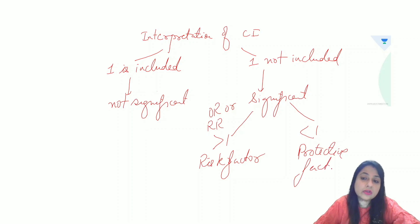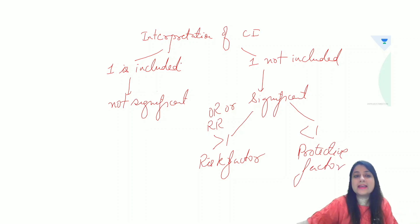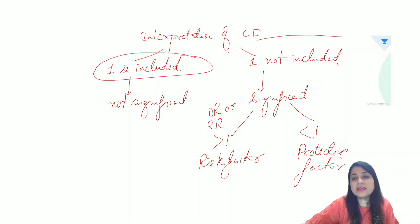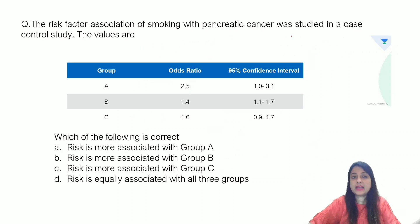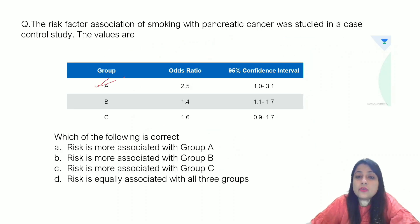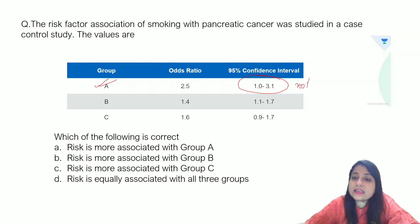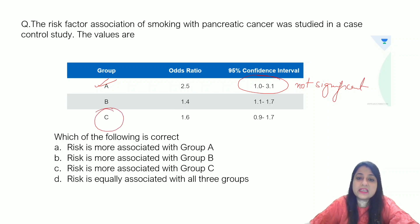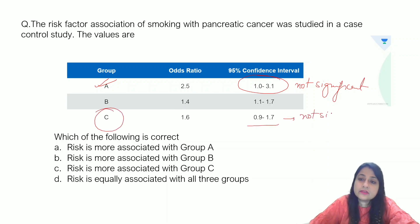So come back to this question. Look at Group A — first, don't look at the odds ratio, look at the 95% CI: 1 to 3.1. One is included, so this is not significant. Similarly, look at Group C: 0.9 to 1.7. Again, one is included, so this is also not significant.